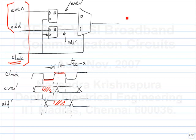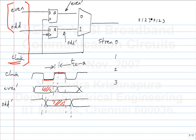If we have 4 streams — stream 0, 1, 2, 3 — and want the output sequence 0, 1, 2, 3, 0, 1, 2, 3, we can build it from 2:1 multiplexers in a tree. We use one mux for streams 0 and 2 and another for streams 1 and 3, then combine those two outputs with a third mux.